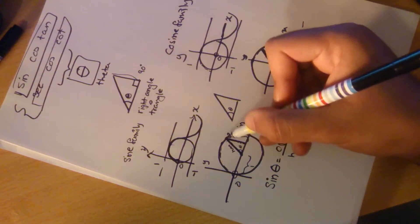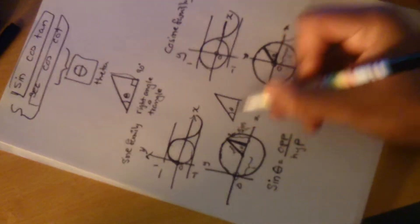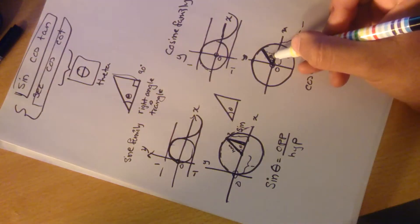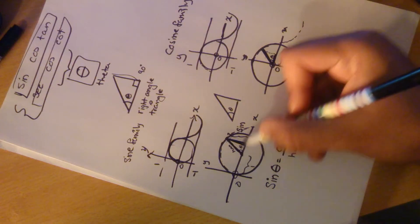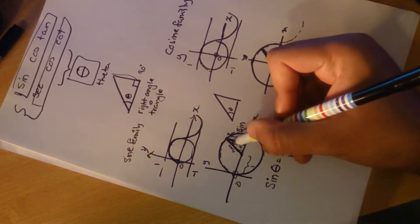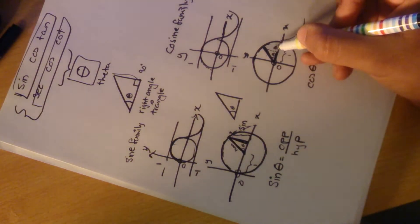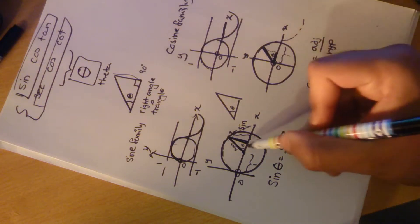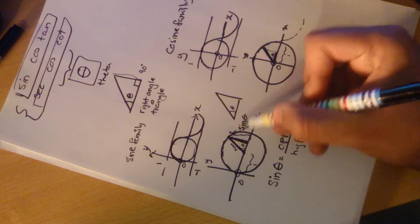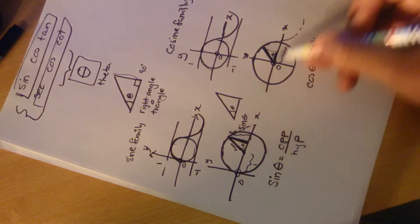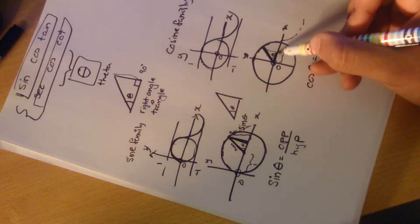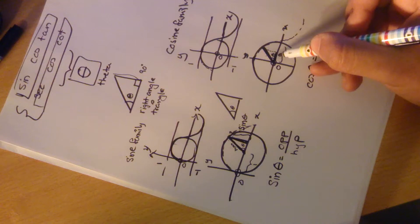Cosine theta is equal to adjacent over hypotenuse — the ratio of the adjacent side to the hypotenuse, which is the opposite of the sine ratio. Instead of the opposite side, you use the adjacent side. They are both separated by the angle theta but in opposite fashion: sine theta uses the opposite side and cosine theta uses the adjacent side — 'adjacent' meaning beside it.